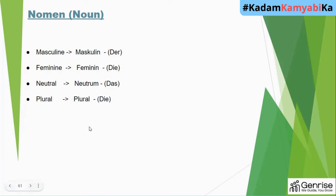Every noun has a gender. All of these articles — 'der', 'die', 'das', 'die' — would mean 'the' in a sentence. If you see these written before a noun, every noun will start with a capital letter.